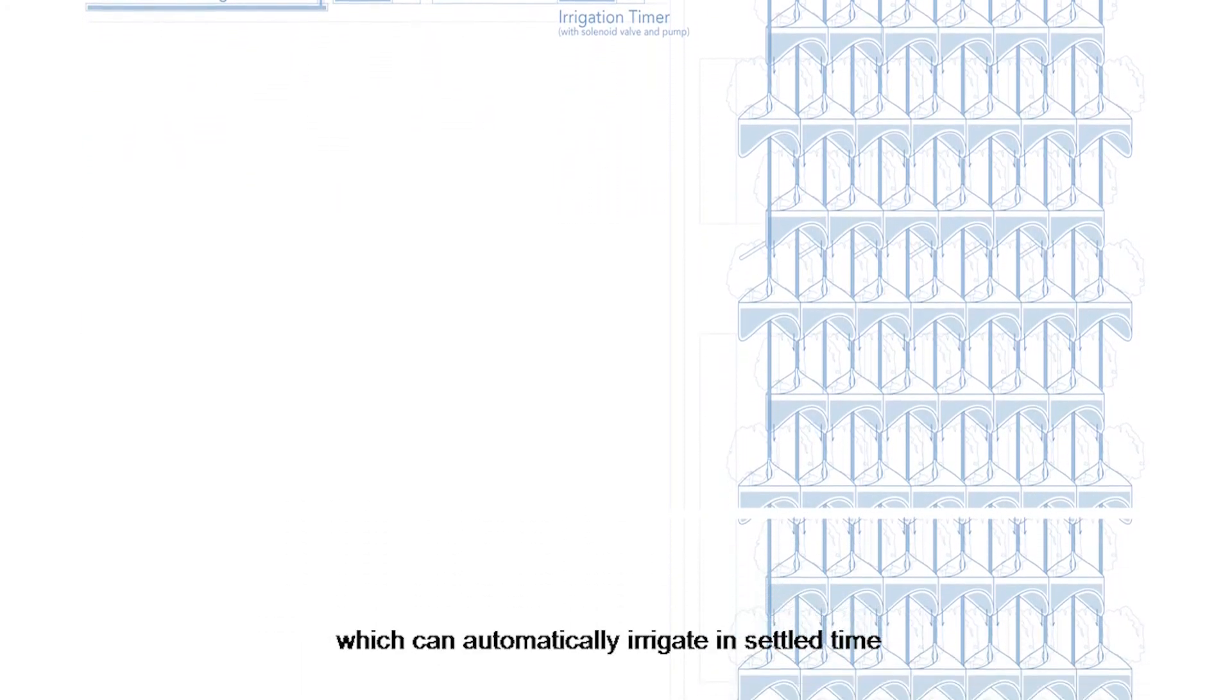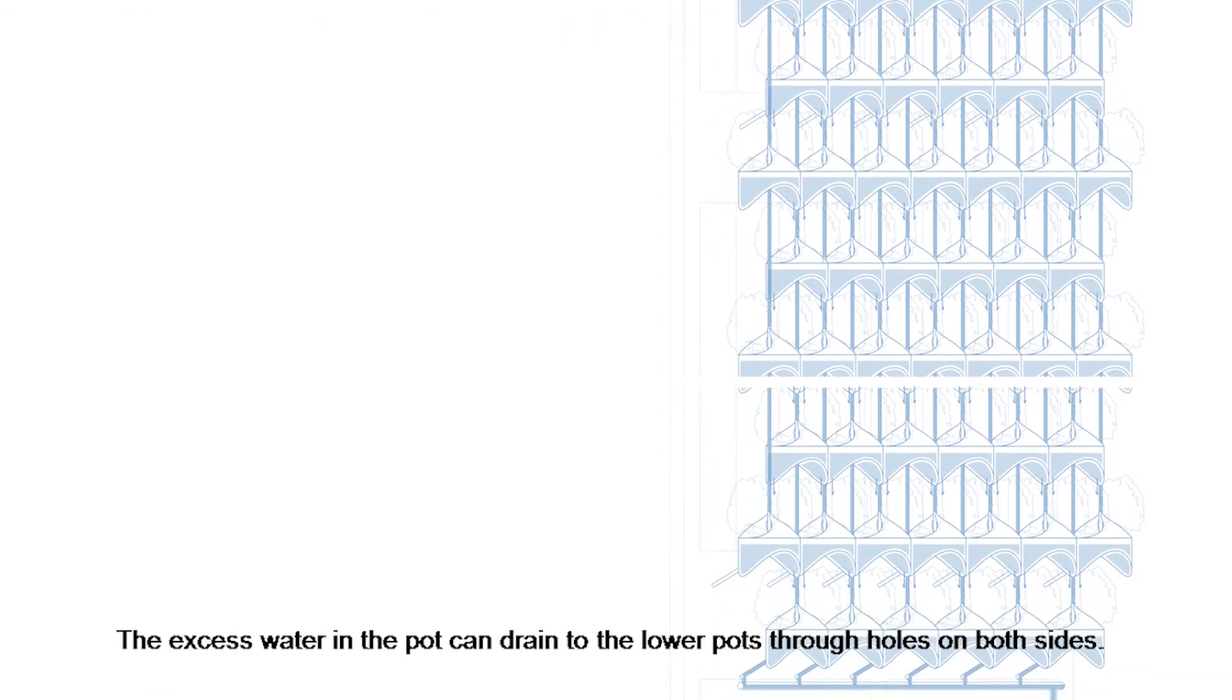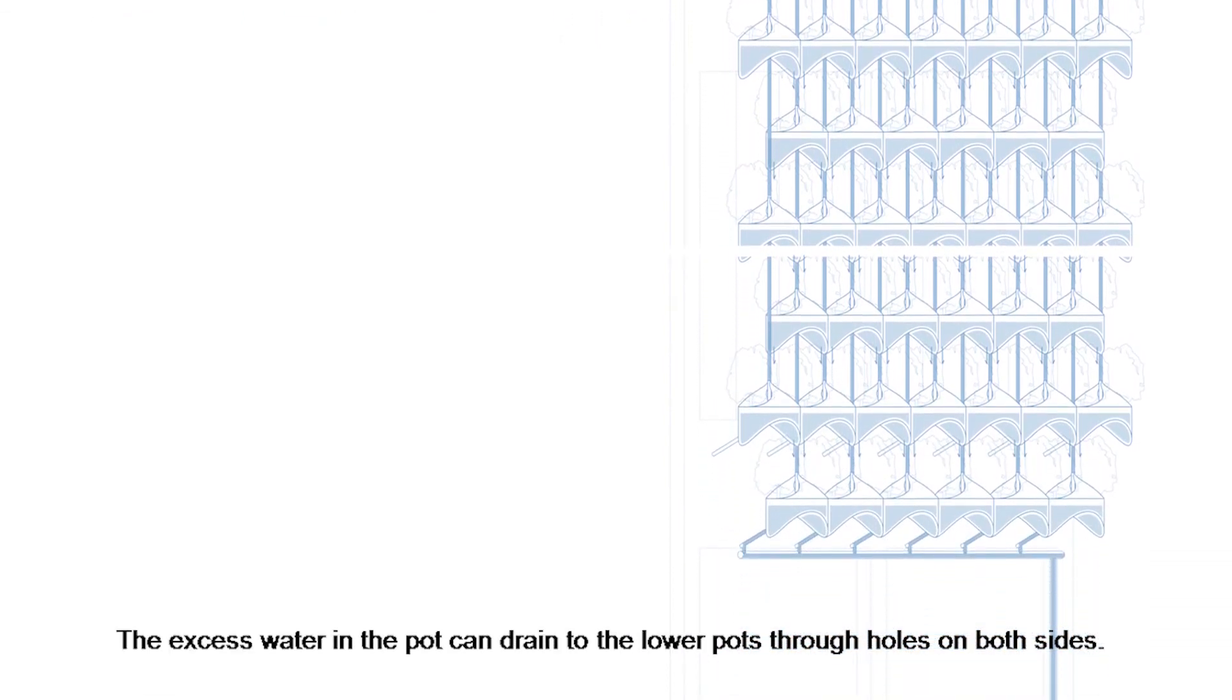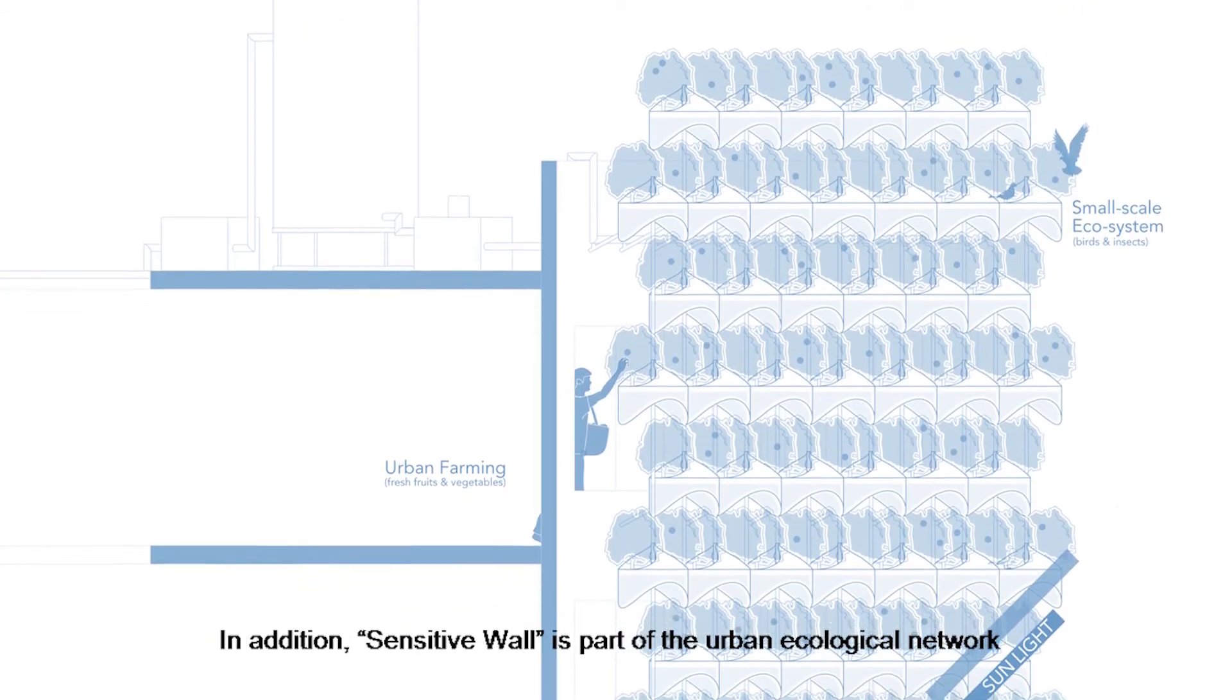The plant wall system combines water recycling equipment, which can automatically irrigate at set times. The excess water in the pot can drain to a lower pot through hoses on both sides.